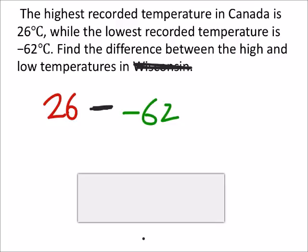So really, this is just 26 minus negative 62. And so we can see we're going to add these two together. Since it's subtracted negative, that looks like it's going to be 88 degrees difference between the two.